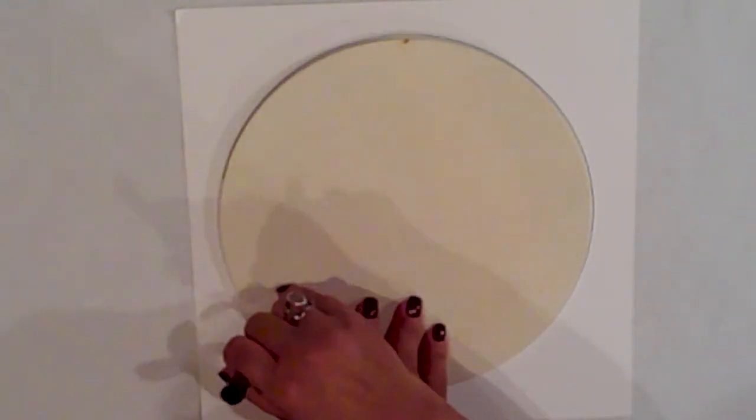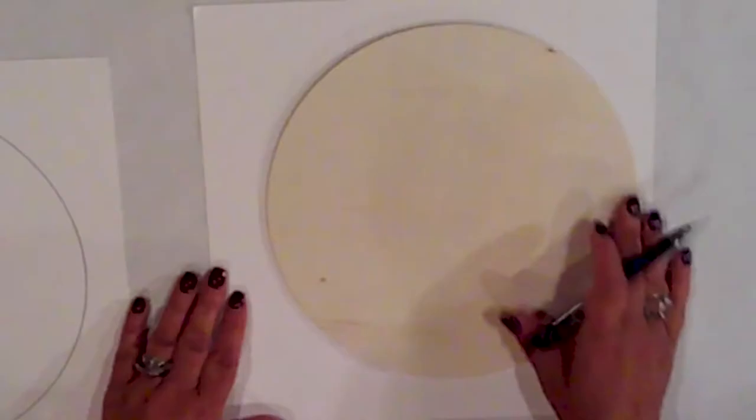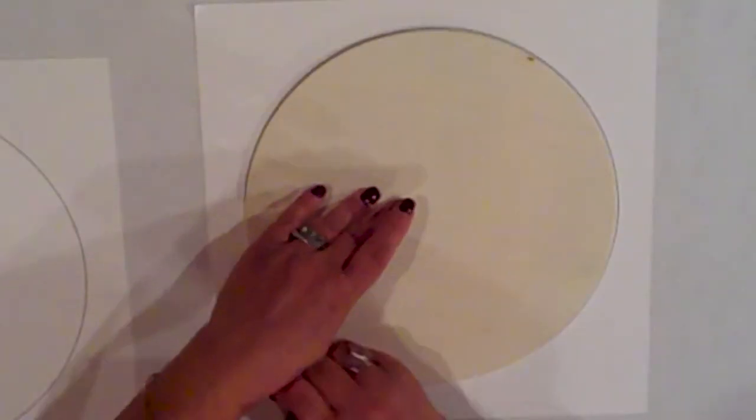Let's get into it. So first I'm tracing circles onto some plain cardstock. This circle's about two inches bigger than my styrofoam discs. I need two at this size.